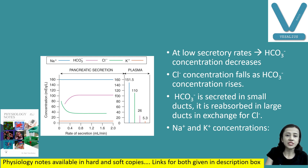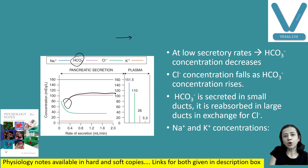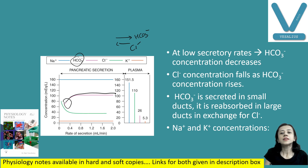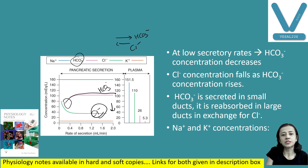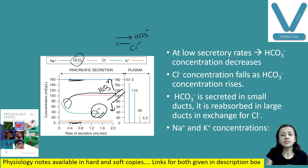At low secretory rate, bicarbonate secretion is less; as the secretory rate increases, bicarbonate secretion increases. Opposite is true for chloride — as secretory rate increases, chloride concentration decreases due to chloride shift, while bicarbonate concentration increases. Sodium and potassium concentrations remain almost constant, similar to plasma, and do not change with flow rate.